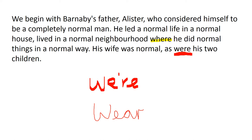We've also got 'w-e apostrophe r-e' — that's a contraction, a word made smaller: 'we are.' And then the final one, 'w-e-a-r' — 'I wear a red coat' — so that's the one where you're talking about putting something on. Were, where, we're, and wear — words that children will often confuse. It's really helpful as we're reading a text that if we find such words, we point them out to our readers.